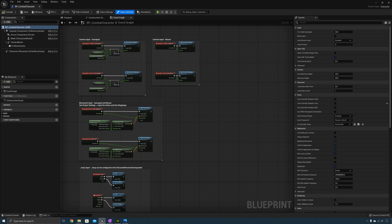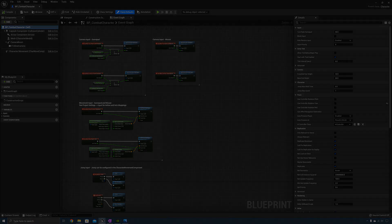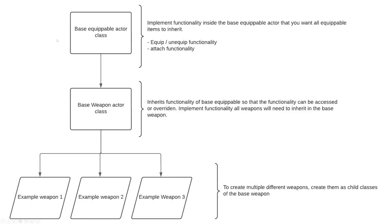For this lecture, you will need to understand some basic concepts of object-oriented programming. I will briefly cover them so that everyone can understand what we're doing and why. In object-oriented programming, a parent class is one class and a child class is another class that inherits all the variables and functions assigned to the parent class. So in the case of our base equipment, we're going to need a base equippable actor class, and inside it we're going to need functionality that most equippable items need to inherit.